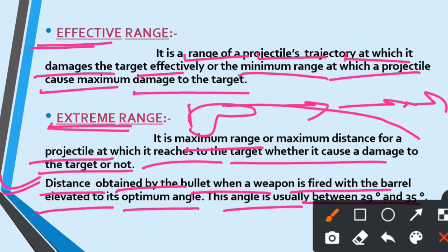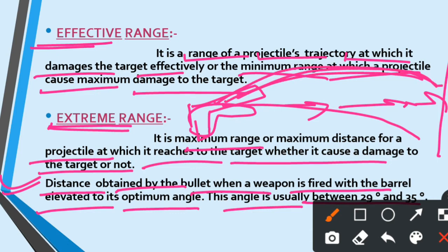In normal condition, if you have a target, then you can reach the target. If you have a firearm, then you can move the barrel to the upper side — you can elevate the horizontal angle — meaning that the bullet can reach the target very easily. This angle is between 29 to 35 degrees, and at this elevation the bullet will reach the maximum distance, i.e., extreme range.